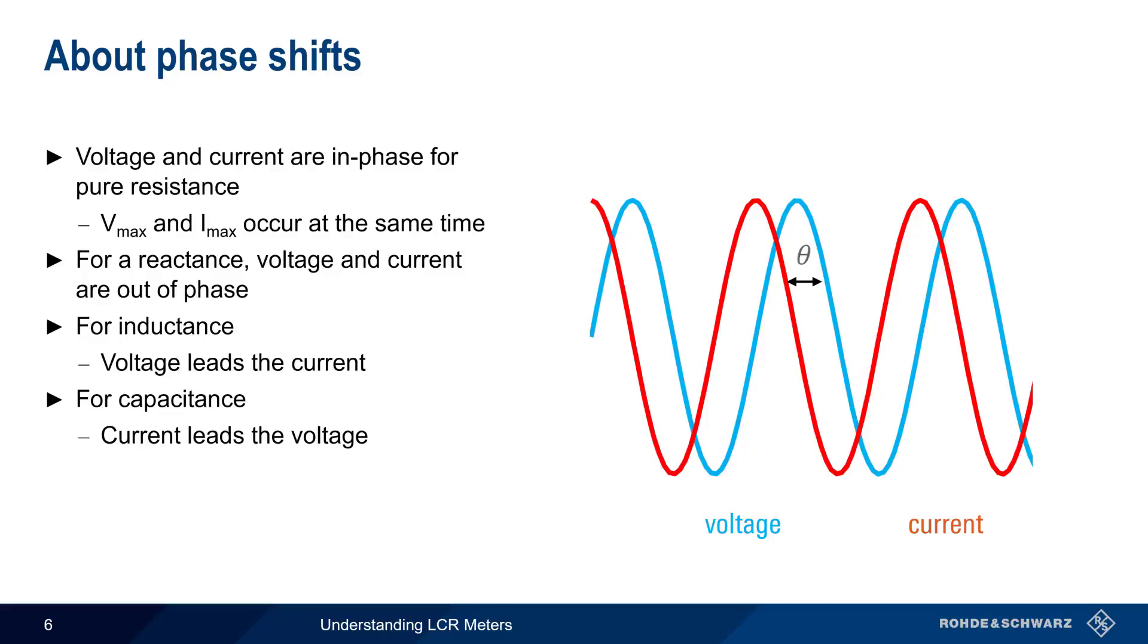In either case, we can use the amount and the direction of phase shift to determine the amount and type of reactance that caused it.